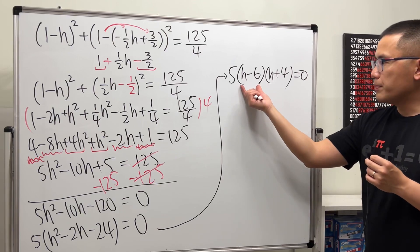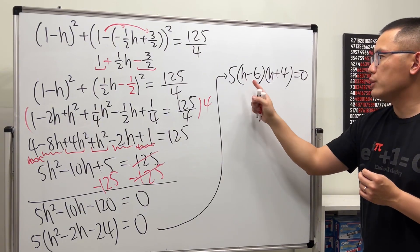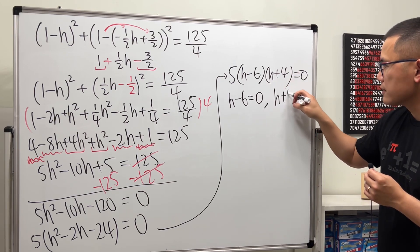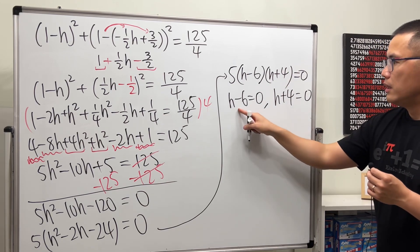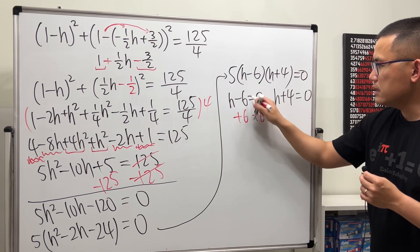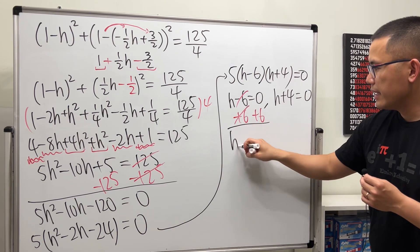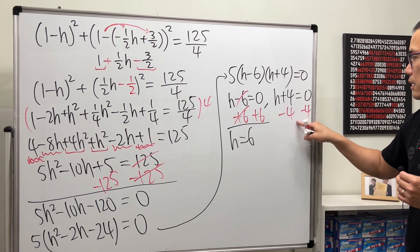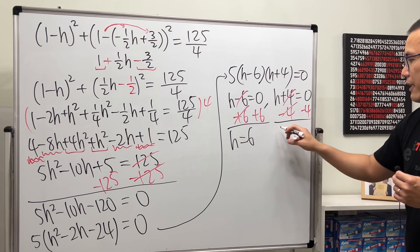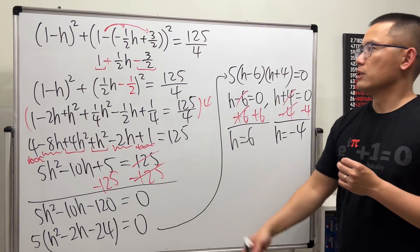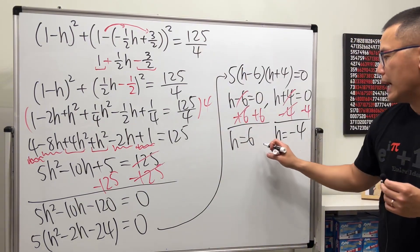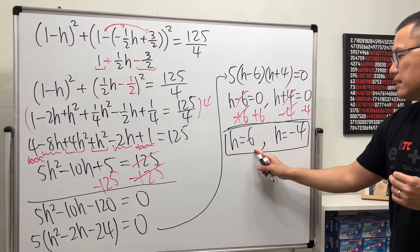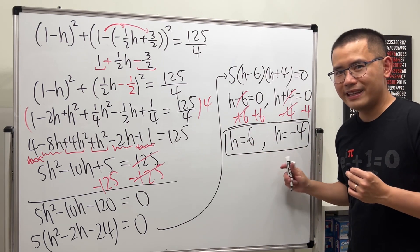So we set each factor equal to zero. We make h minus 6 equal to 0, and h plus 4 equal to 0. Adding 6 on both sides gives h equals 6. Subtracting 4 on both sides gives h equals negative 4. So for this equation we have two answers: positive 6 and negative 4.